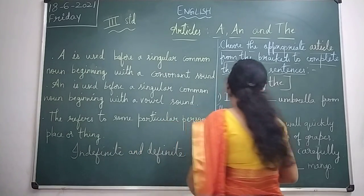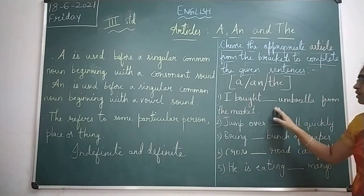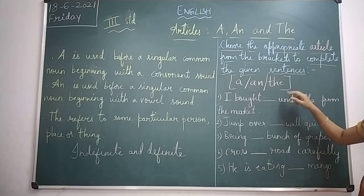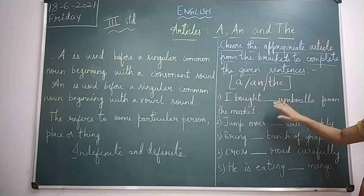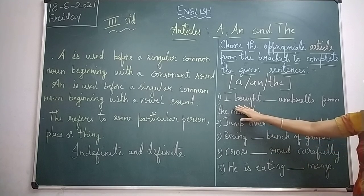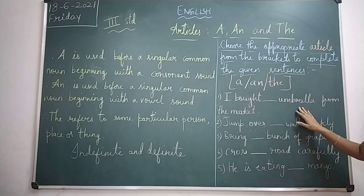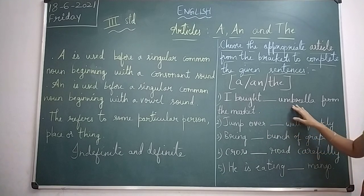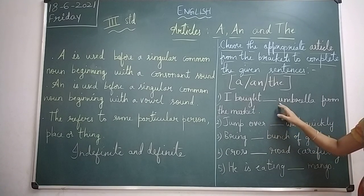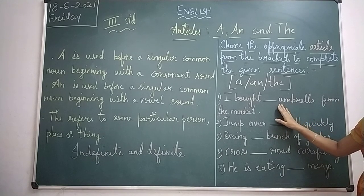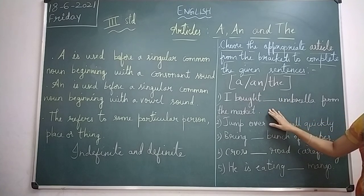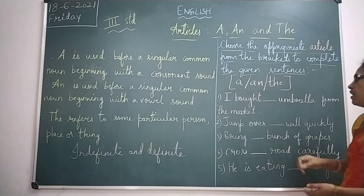On that basis we are going to do this exercise. We have to choose the appropriate article from the bracket and complete the sentences. The first one is: 'I got dash umbrella from the market.' You can see the word 'umbrella' — the first letter is U, it begins with a vowel sound, so you have to choose 'an' here.